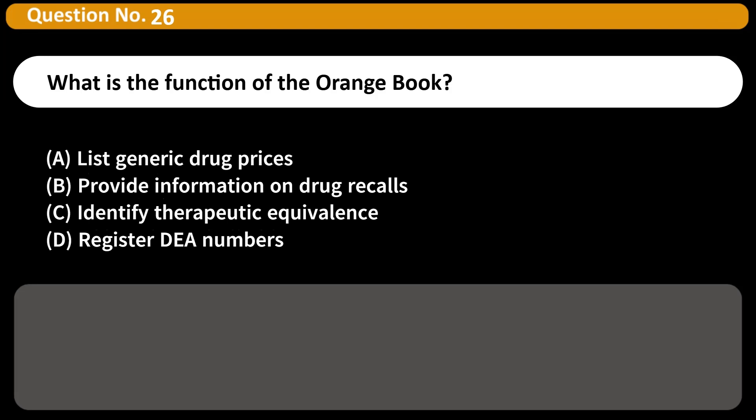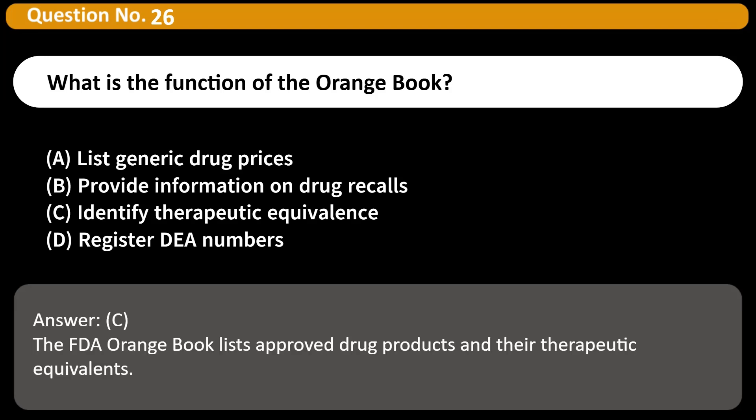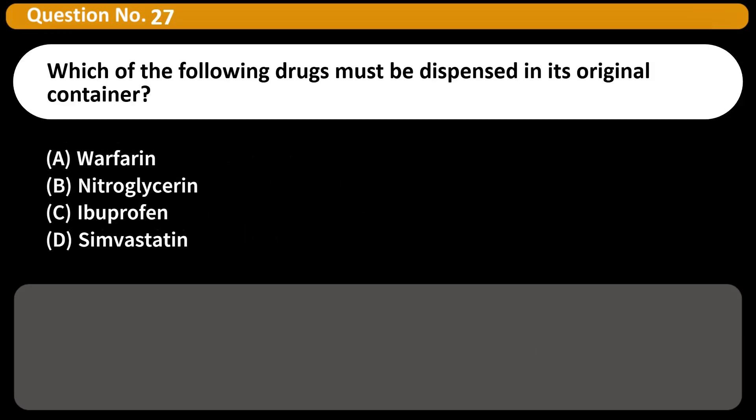What is the function of the Orange Book? A. List generic drug prices. B. Provide information on drug recalls. C. Identify therapeutic equivalents. D. Register DEA numbers. Answer: C. The FDA Orange Book lists approved drug products and their therapeutic equivalents.